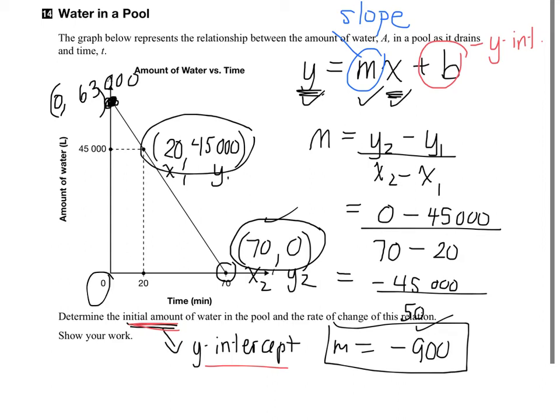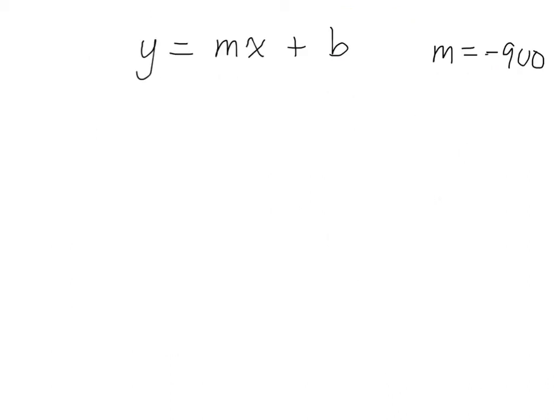So, to start, after zero minutes have passed, the amount of water in the pool is 63,000 liters. And then, eventually, how long does it take for the water to drain completely? 70 minutes. How long did it take? 70 minutes. What is that? An hour and 10 minutes.